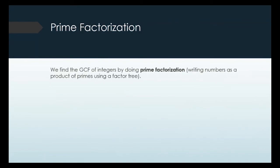Prime factorization is what I use when I have large numbers I'm not sure about. If a number is below 100, I know my times tables and can figure out the GCF. But if I don't, I use prime factorization. Here's one example: 54 and 360. I'm going to make factor trees for both. For 54, I know that's 9 times 6.